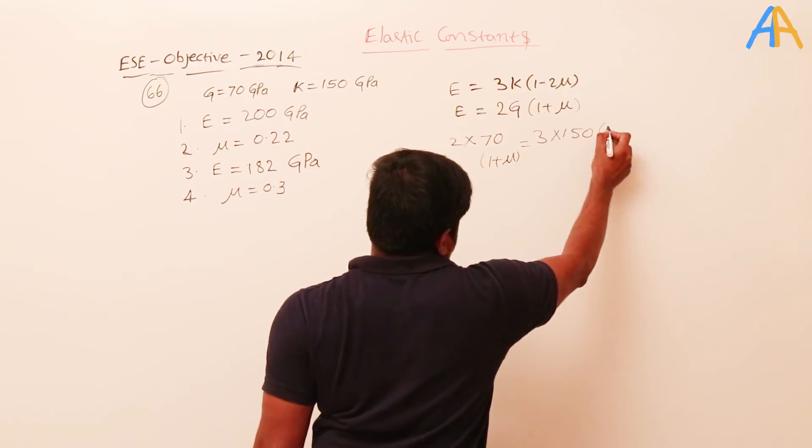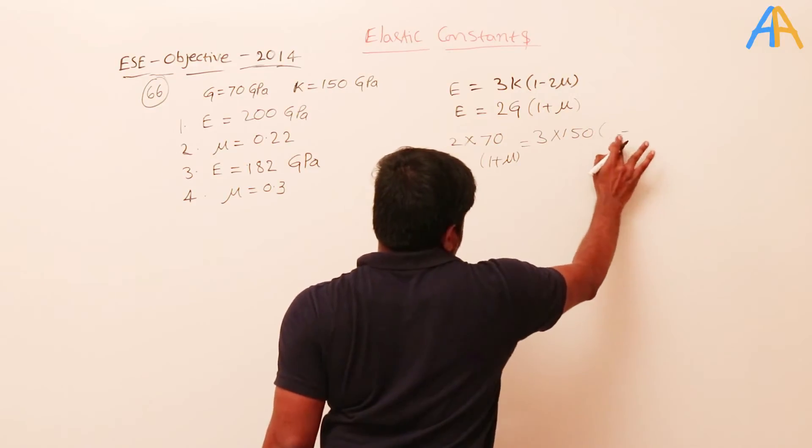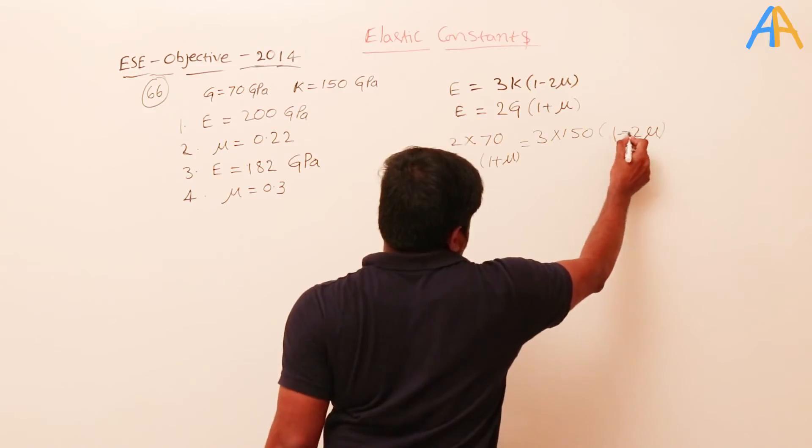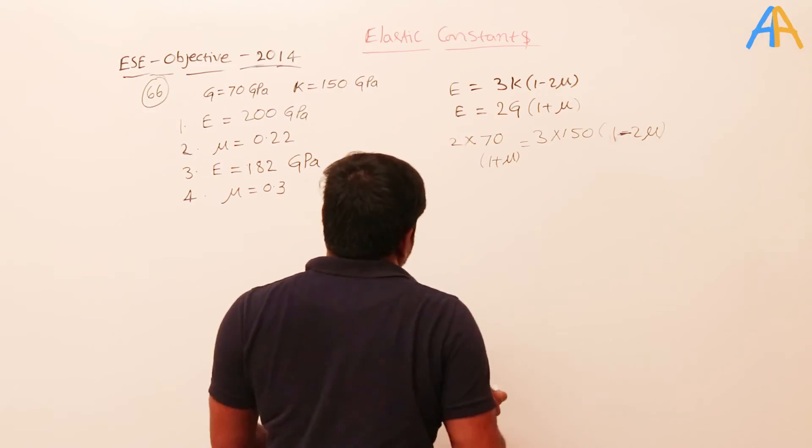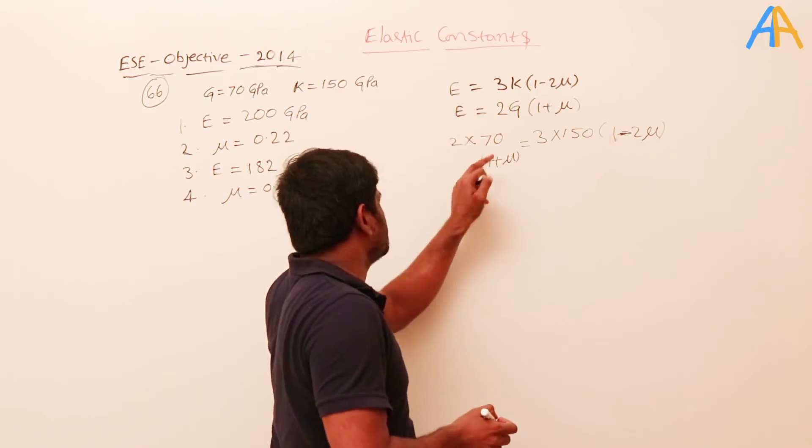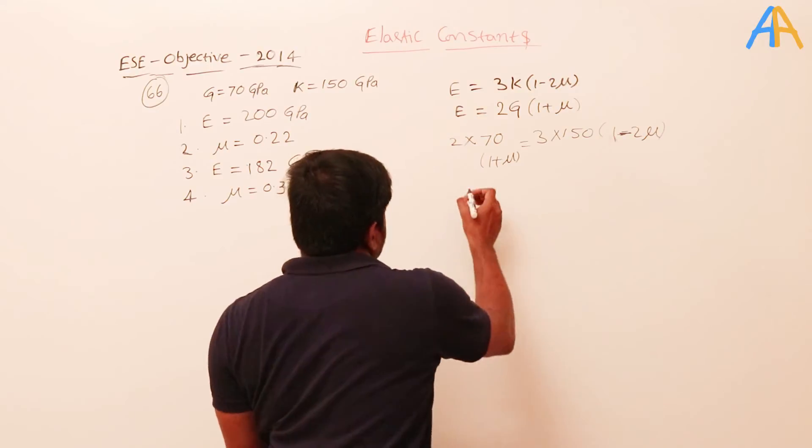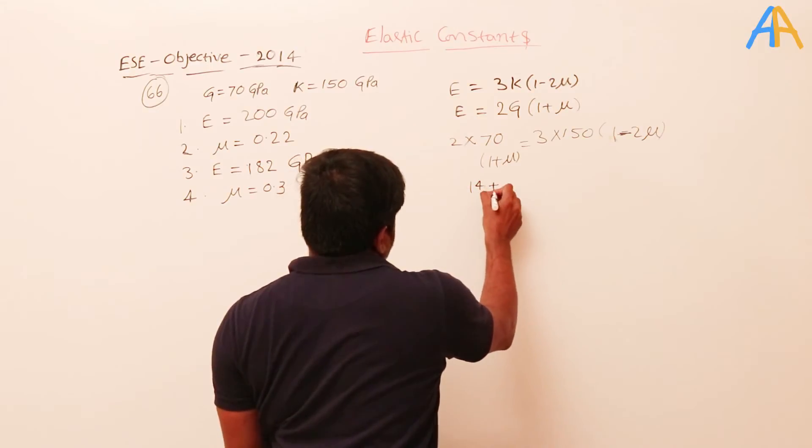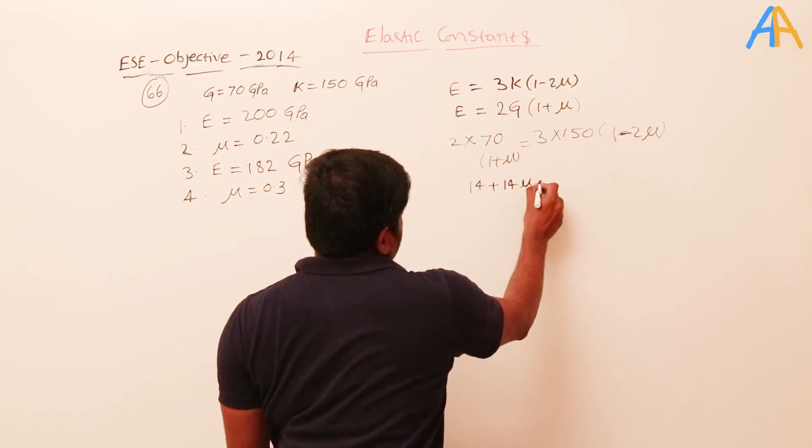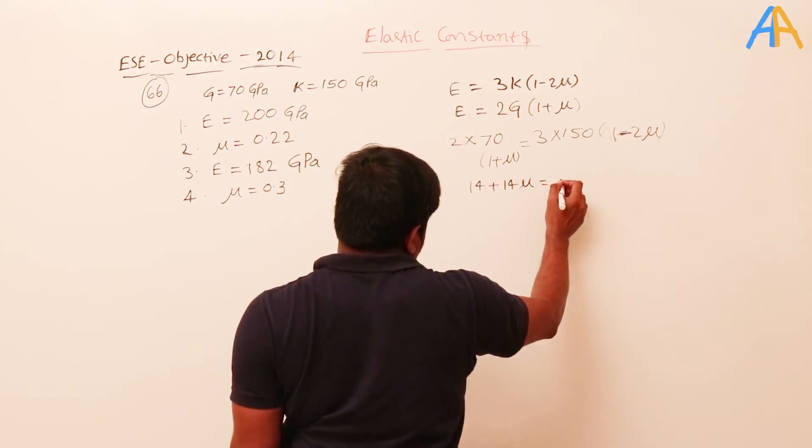So the 3 will get cancelled and 2 into 7 is 14. I'll keep 14 here. 14 plus 14μ equals 3 into 15, that's 45, so 45 minus 90μ.